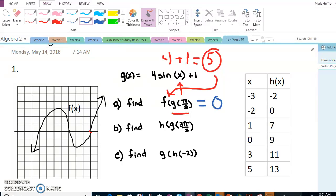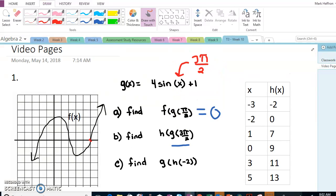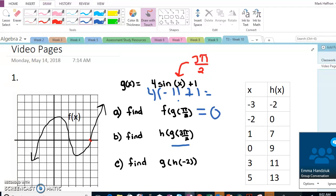Same thing for the next one. g is again the inner function, but this time we are plugging in 3 pi over 2 in for x instead of pi over 2. So at 3 pi over 2, sine of 3 pi over 2 is negative 1, and we multiply that by 4. So 4 times negative 1 is negative 4, plus 1 is negative 3.